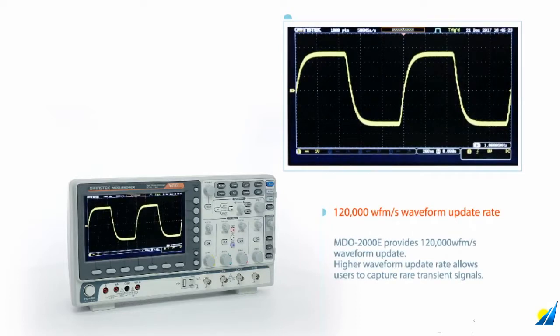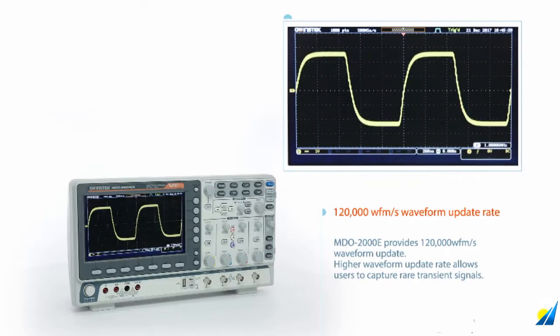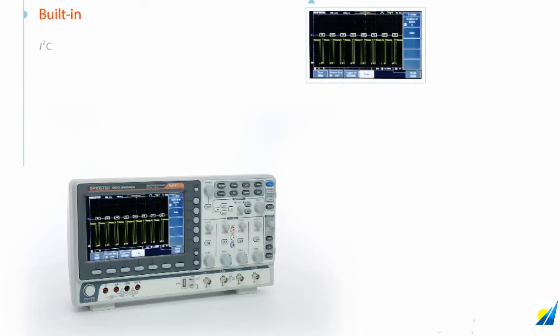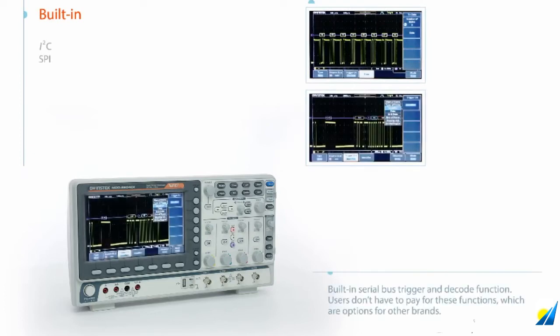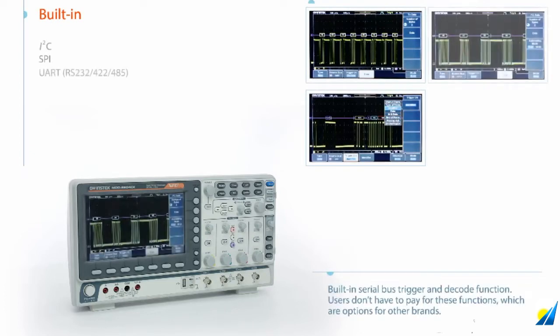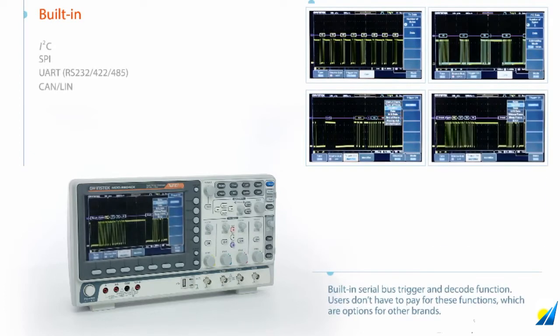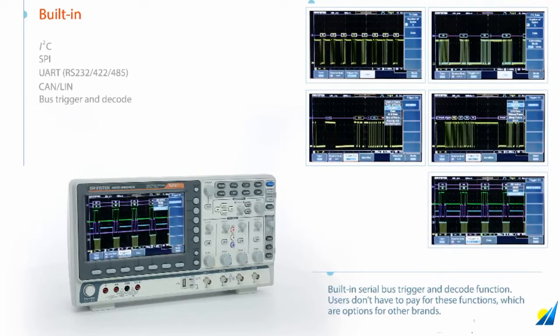The higher waveform update rate allows users to capture rare transient signals. The built-in serial bus trigger and decode function means users don't have to pay for these functions, which are options for other brands.